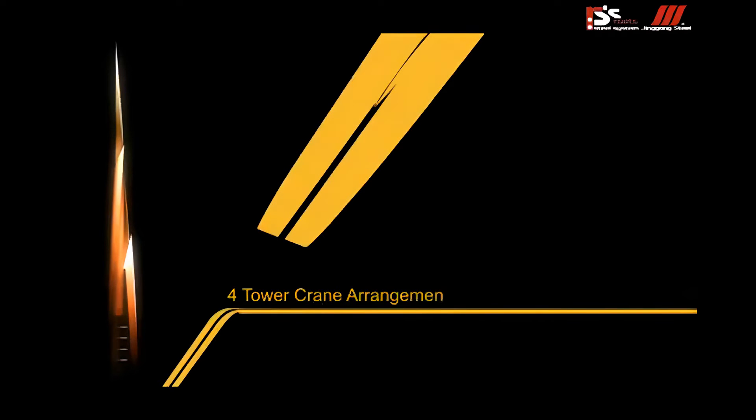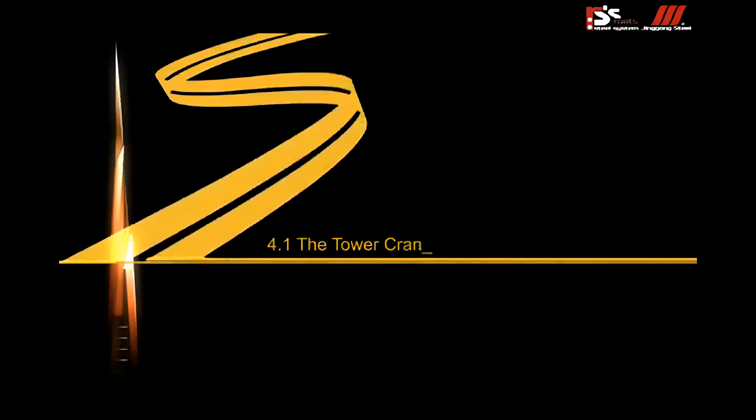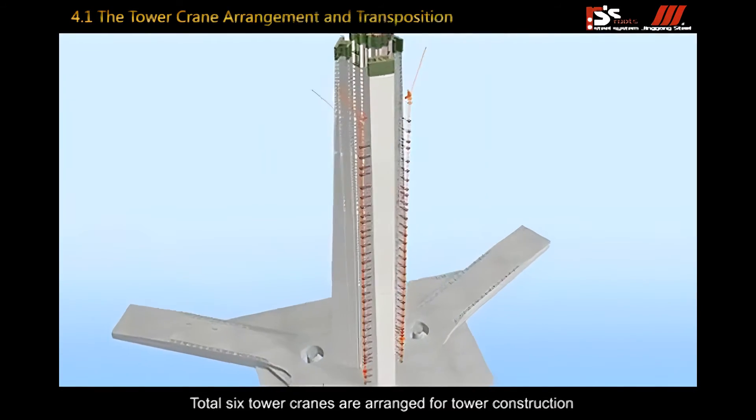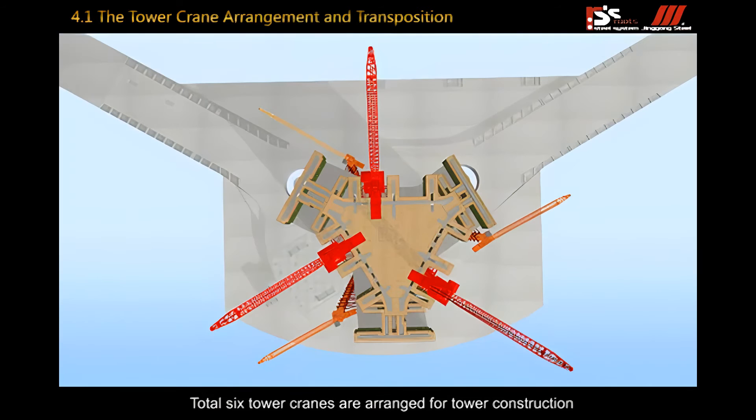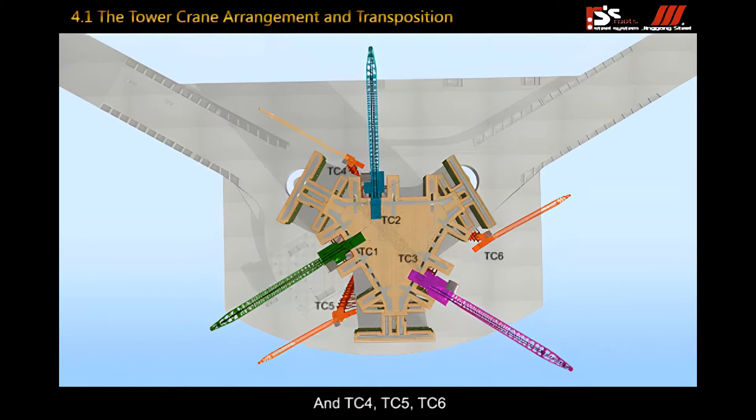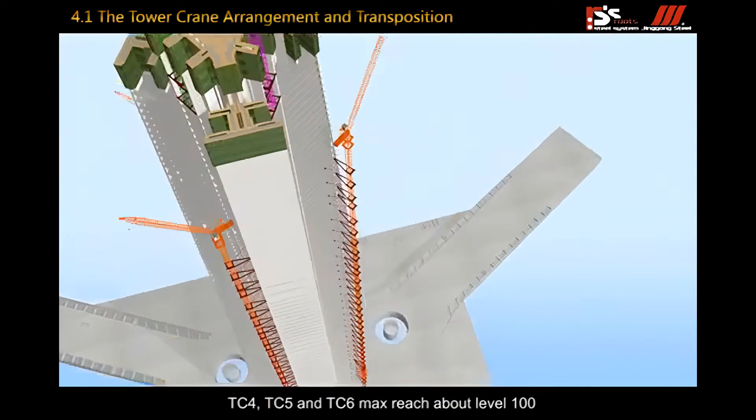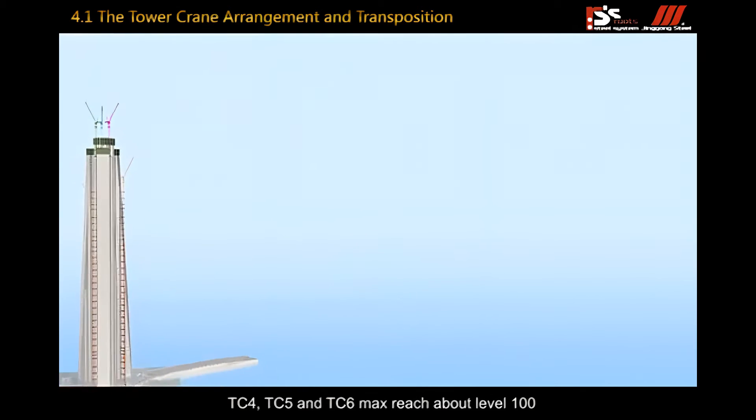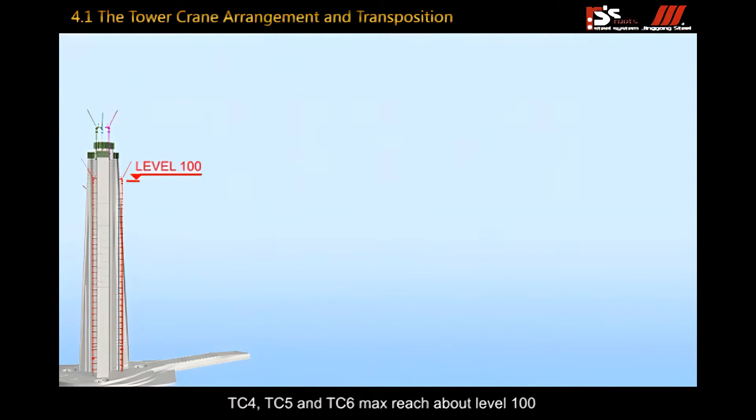Fourth, tower crane arrangement, transportation and dismantling. 4.1 tower crane arrangement and transportation. Total six tower cranes are arranged for tower construction which are numbered TC1, TC2, TC3 and TC4, TC5, TC6. TC4, TC5 and TC6 max reach about level 100.